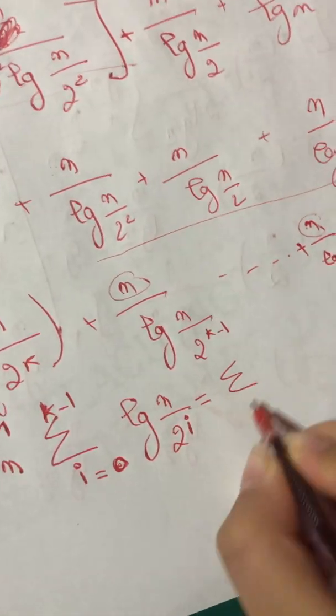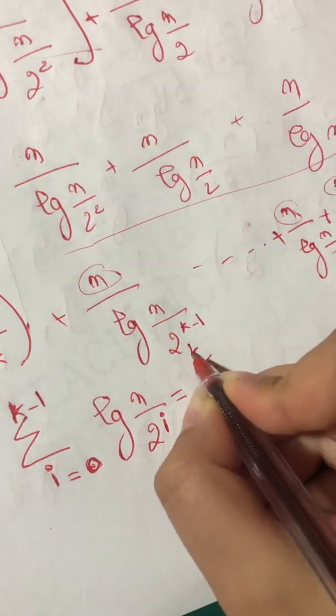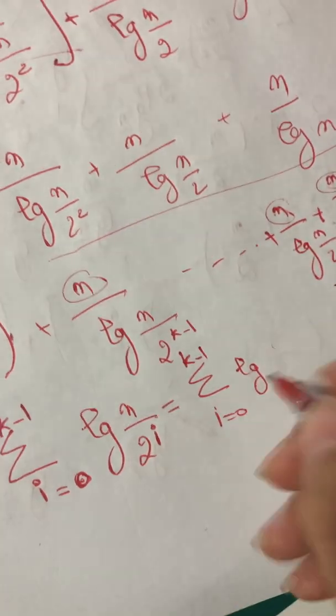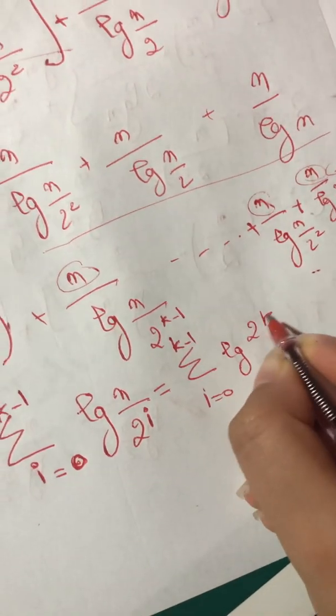As I said here, so it's equal to summation for i equals 0 to 2^k minus 1, log(2^k/2^i).